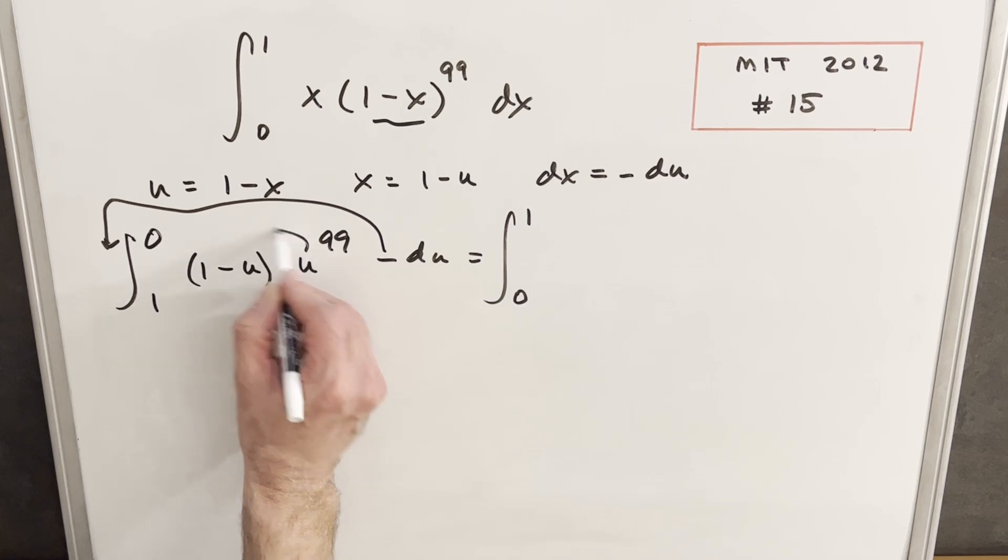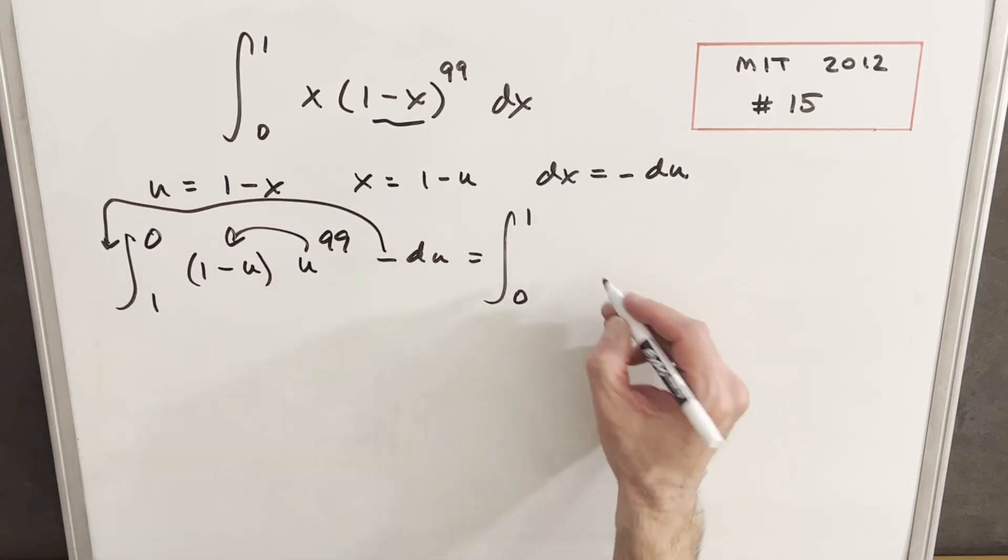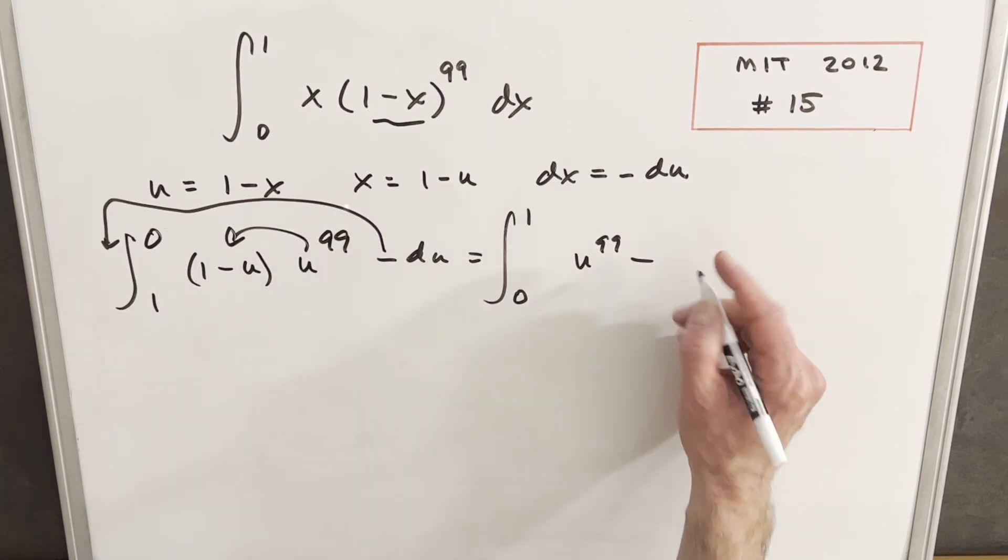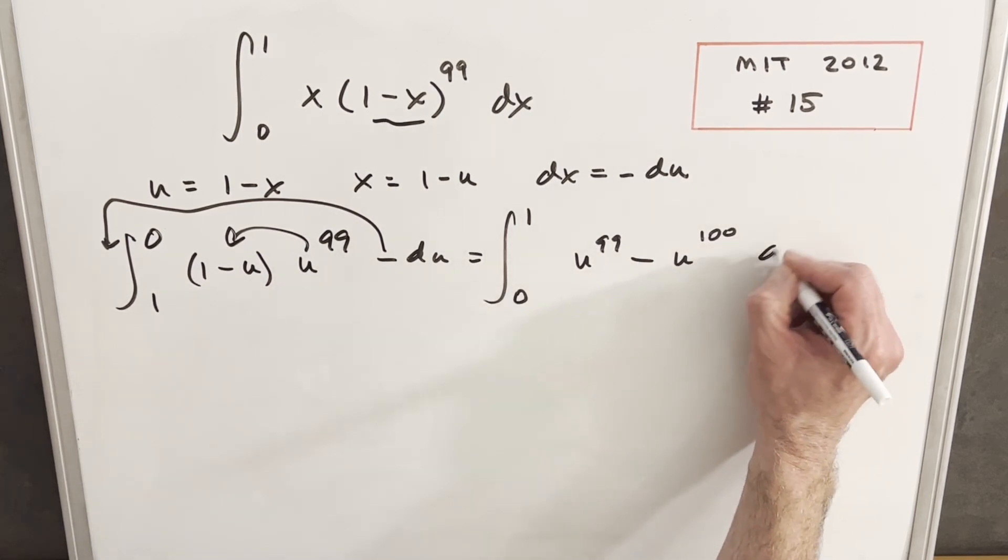And in one step, we'll distribute this. Rewriting that part, we'll have u to the 99 minus u to the 99 times u to the first is u to the 100 du.